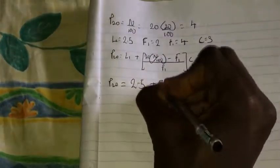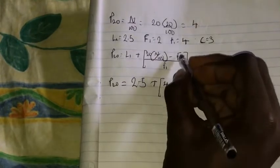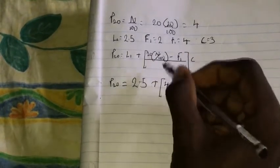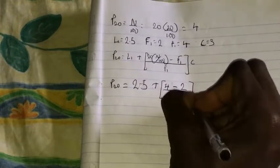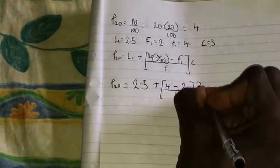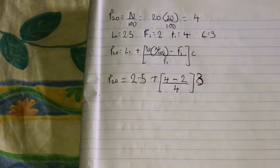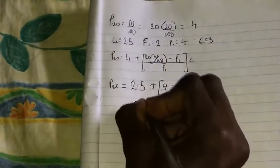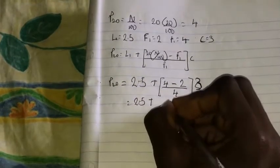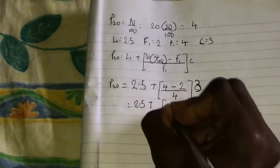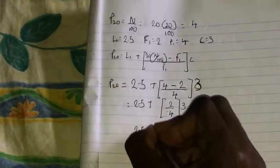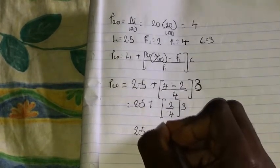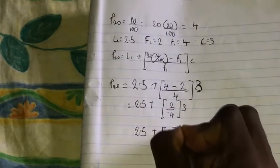Here it is, it's our 2.5 lower class boundary, plus the sum of all this is 4 minus the cumulative frequency before, which is 2. The frequency is 4, then we put our class size, which is 3. Therefore this is 2.5 plus, then this will be 2 over 4, this is 1 over 2, then you put your 3.